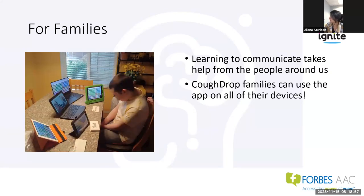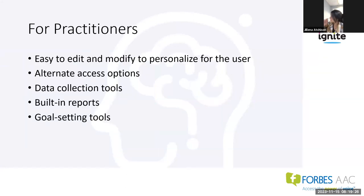For families, there are dozens of boards in different sizes and languages. Learning to communicate takes the best help from the people around us. CoughDrop families can use the app on all their devices. It includes activity ideas and strategies to help families and friends learn how they can help make communication happen. For practitioners and staff, CoughDrop has built-in reports and goal setting tools to keep everyone on the same page and track progress over time. It's easy to edit and modify to personalize for the user, with alternate access options, data collection tools, built-in reports, and goal setting tools.